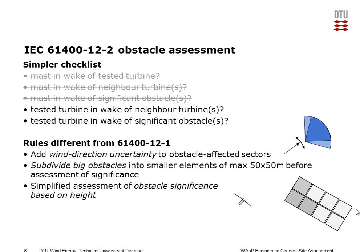For the obstacle assessment, there's a rule that if you have a large obstacle, then you have to divide it into smaller blocks of maximum 50 by 50 meters, and then you analyze each element or block individually. Also, the criteria for obstacle significance is only based on the height of the obstacles and the height of the turbine, so you're no longer using the per-area formula which we know from WASP.